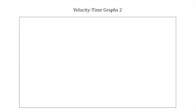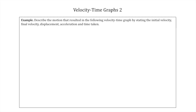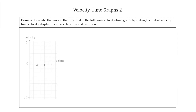In this video we are going to continue looking at velocity-time graphs. We started looking at them in the previous video. The example here is: describe the motion that resulted in the following velocity-time graph by stating the initial velocity, final velocity, displacement, acceleration, and time taken. This is the opposite to the previous question — we've been given the graph and need to describe the motion by finding these five SUVAT variables.